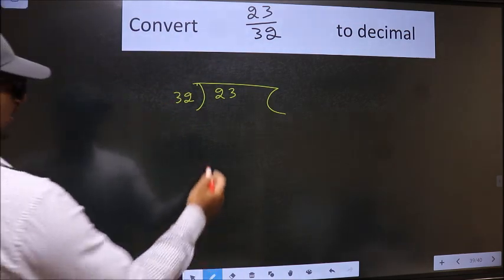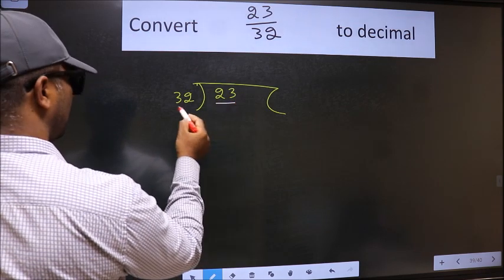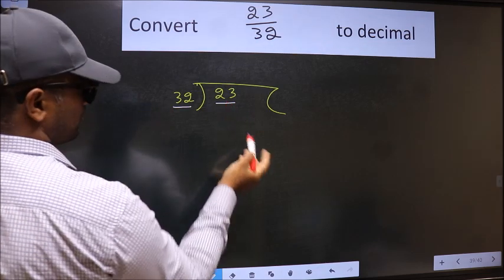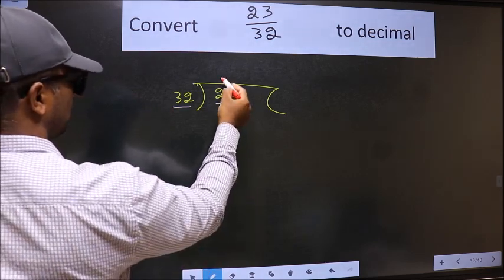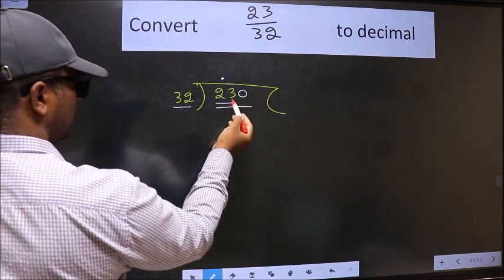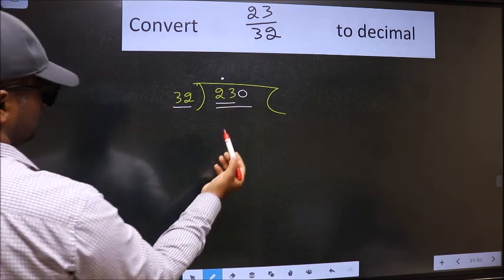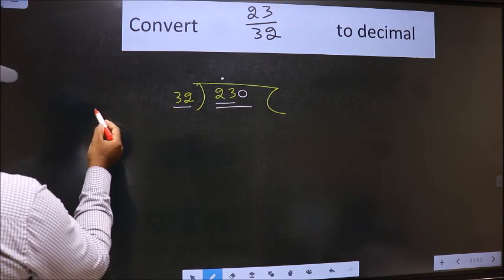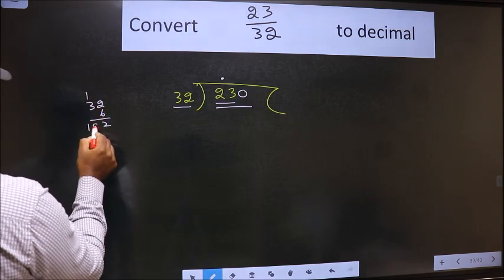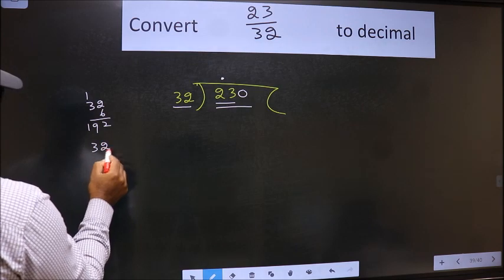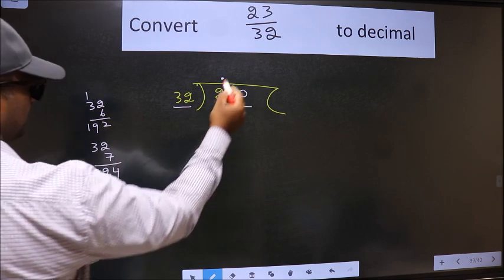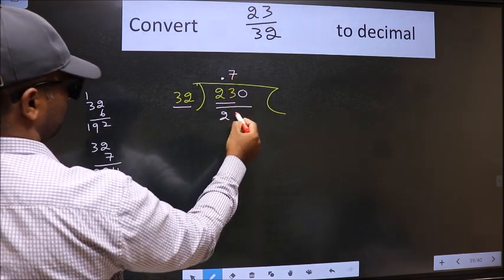Next, here we have 23 and here 32. 23 is smaller than 32, so what we should do is put a dot and take 0. So 230. A number close to 230 in 32 table is... Let us check with 6: 6×2 is 12, 6×3 is 18, so 192. If we take 7: 7×2 is 14, 7×3 is 21. Yeah, 7 we take.